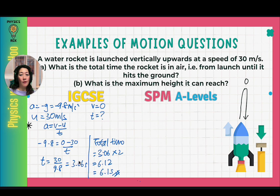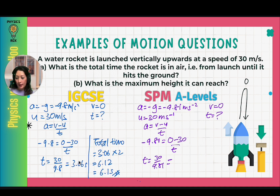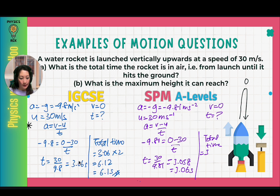For SPM or A-levels, it's exactly the same method but using a = −9.81 m/s². So: −9.81 = (0 − 30)/t, giving t = 3.058 ≈ 3.06 seconds for the upward motion. Total time = 3.06 × 2 = 6.12 seconds. For SPM, write to two decimal places; for A-levels, write to two significant figures: 6.1 seconds.